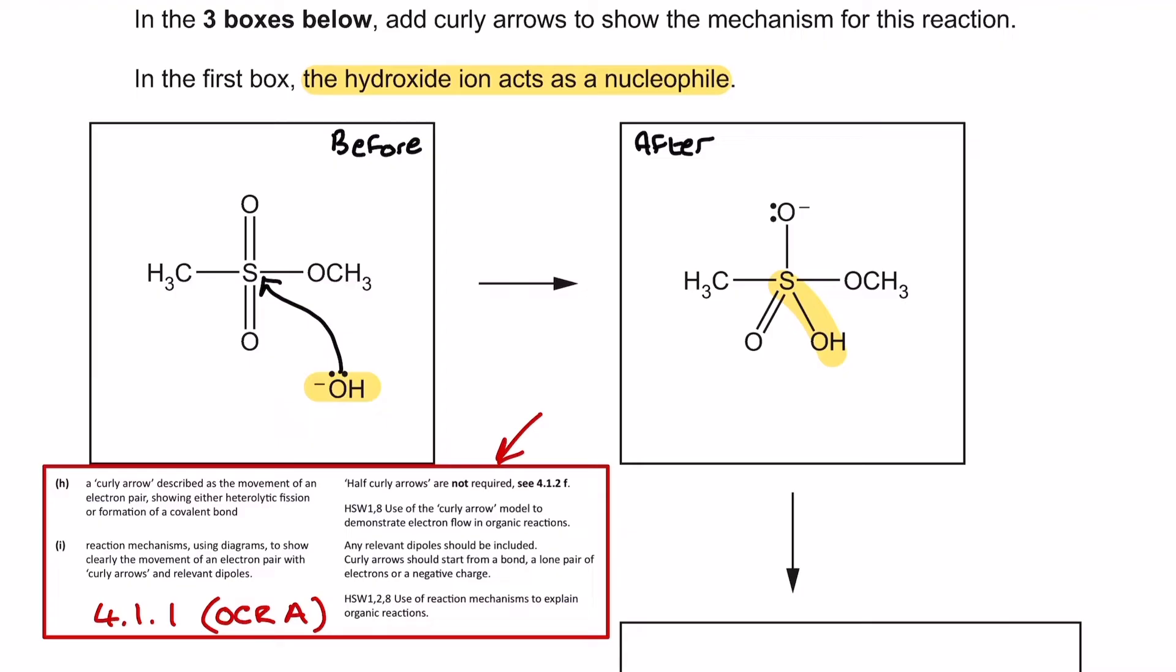I'm going to go straight up right in the face of the sulfur. That's because I can see from the after box that the oxygen is now bonded to the sulfur, and the way it would have done that is by the use of the lone pair, since we are told the hydroxide ion is acting as a nucleophile.